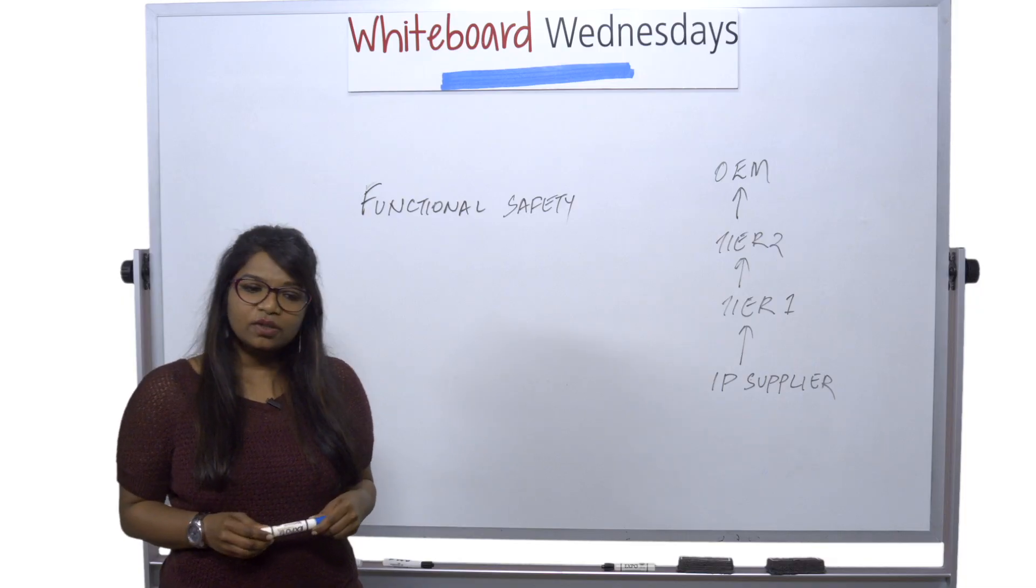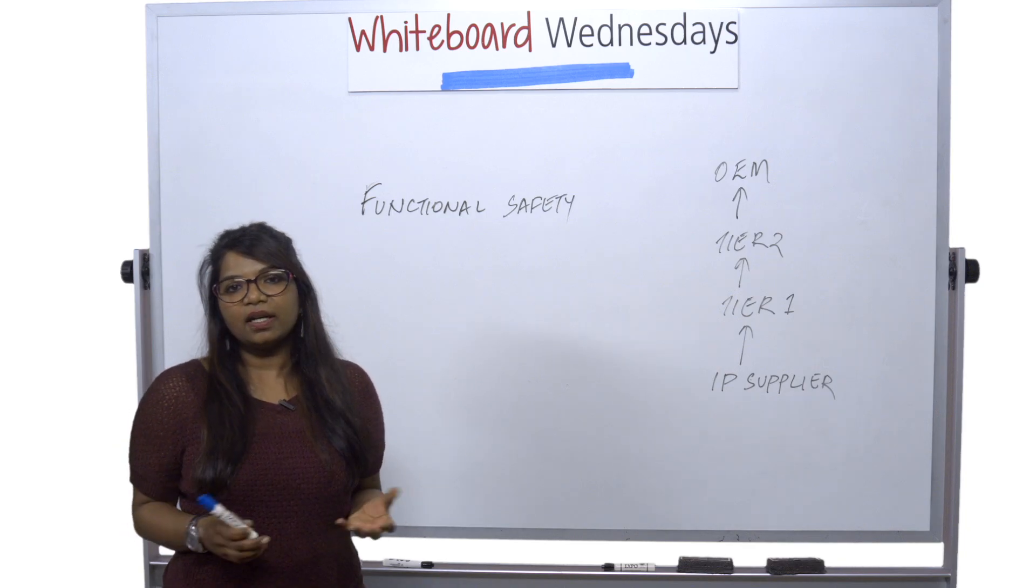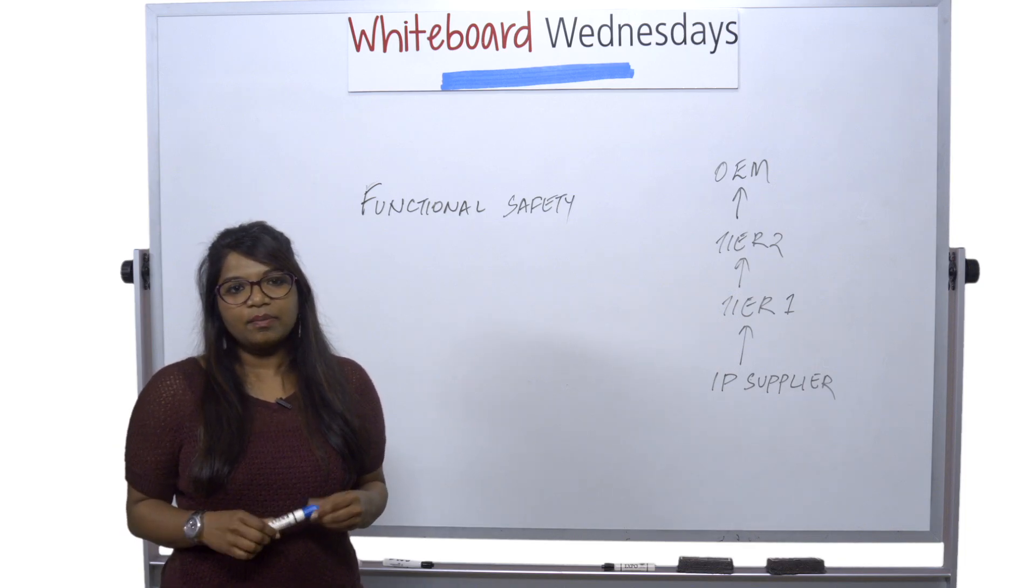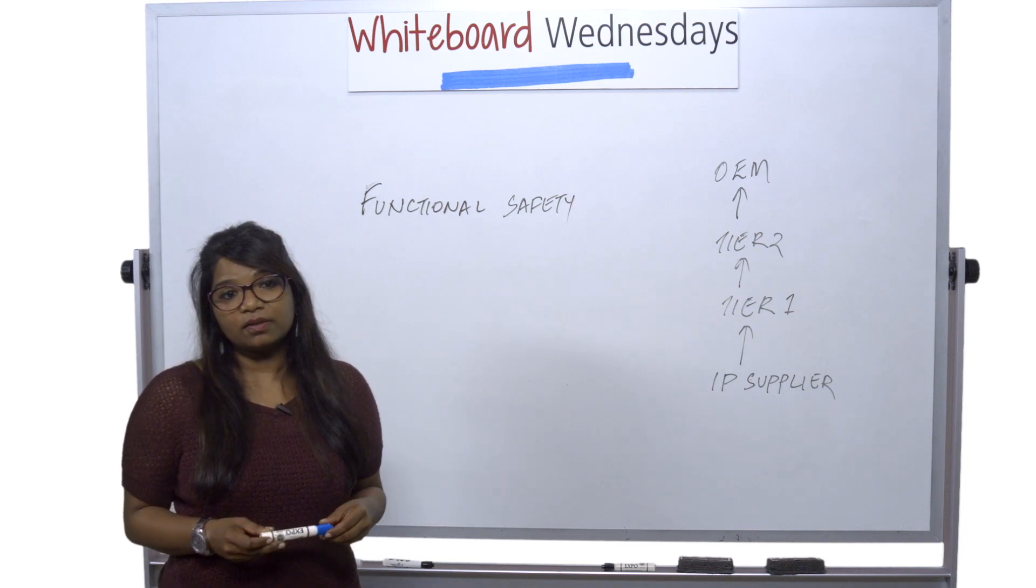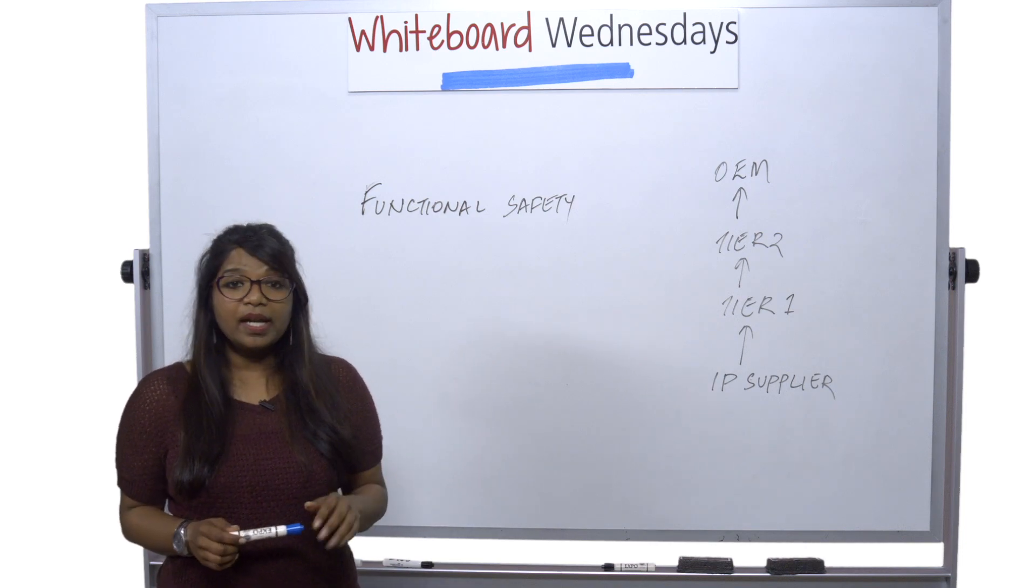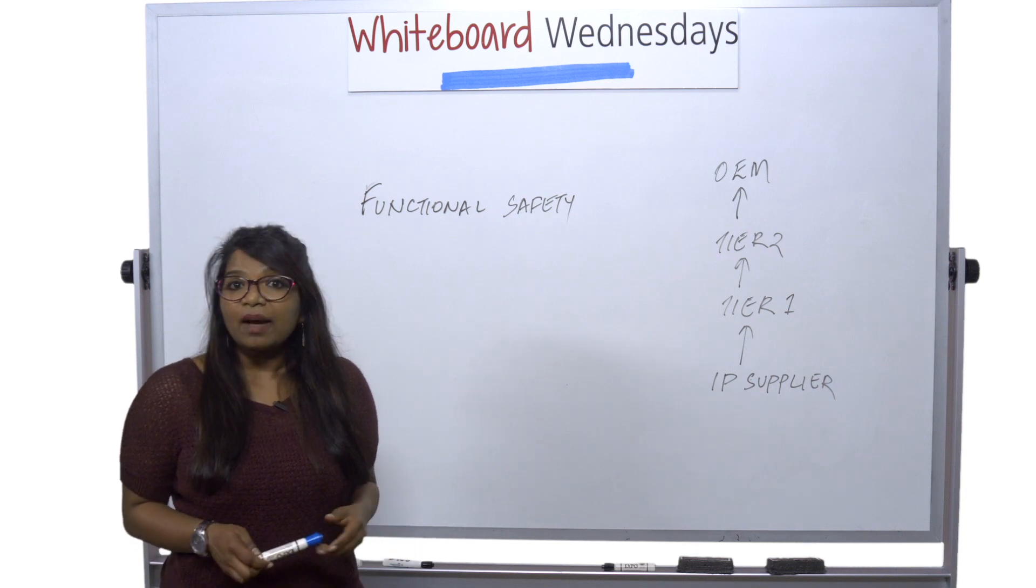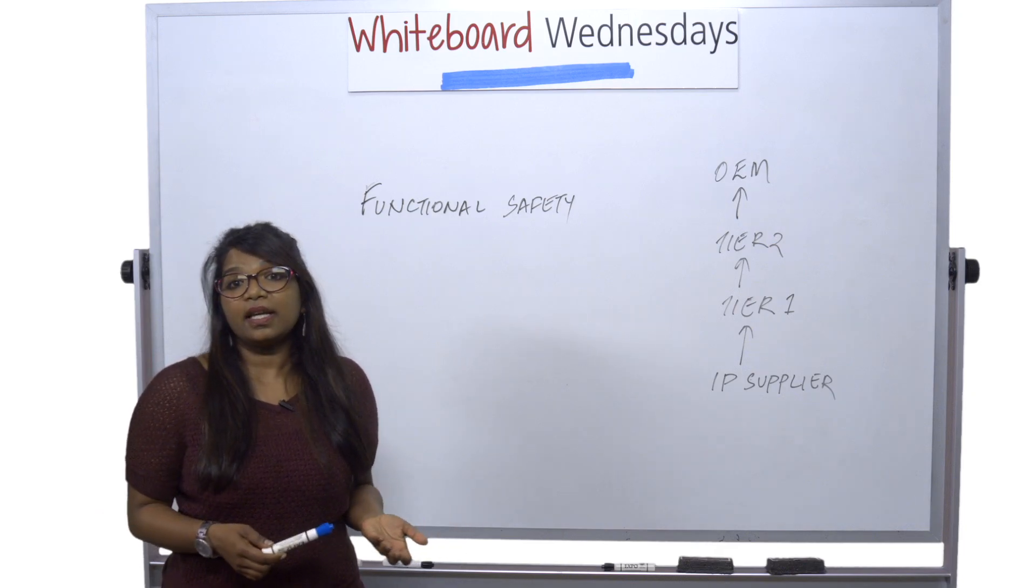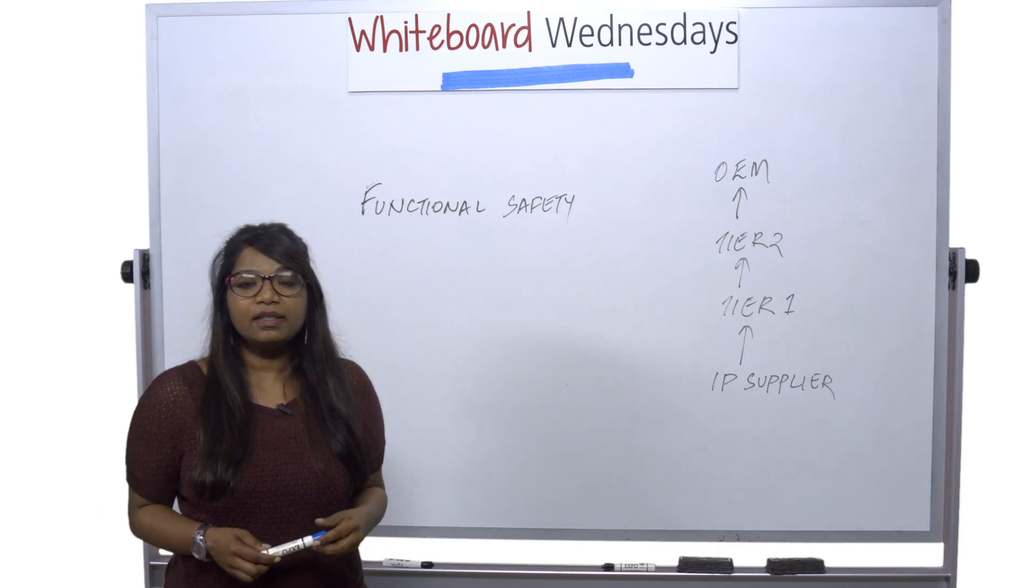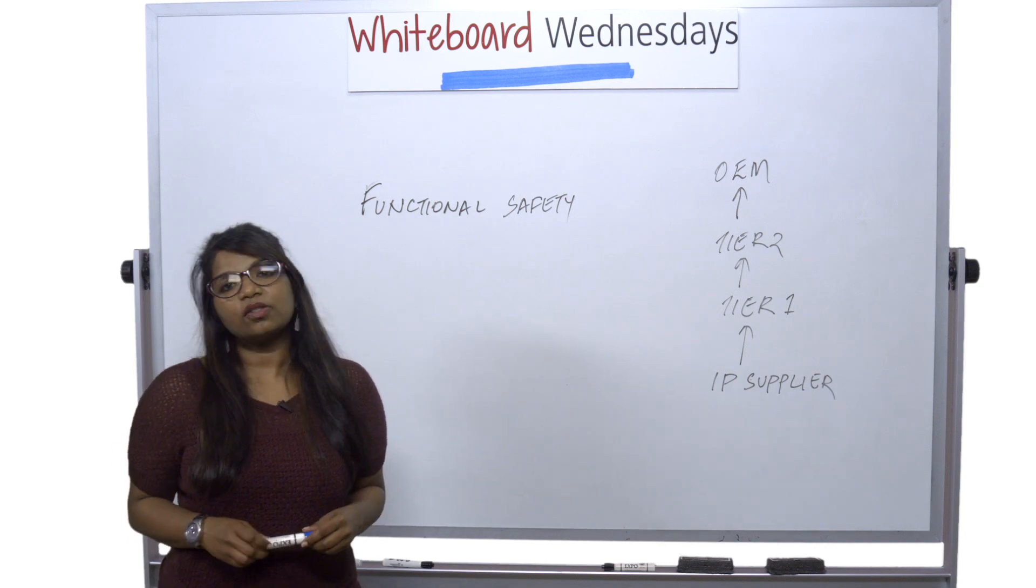So what is functional safety? The whole concept of functional safety is we want to create a safe product and the product in some way is functioning the way it's supposed to function. For example, when we apply a brake you expect the car to stop, and let's say your camera malfunctions, it's supposed to indicate in some way to the user saying that I've gone wrong and I need some sort of a protection mechanism. So that whole concept is functional safety.